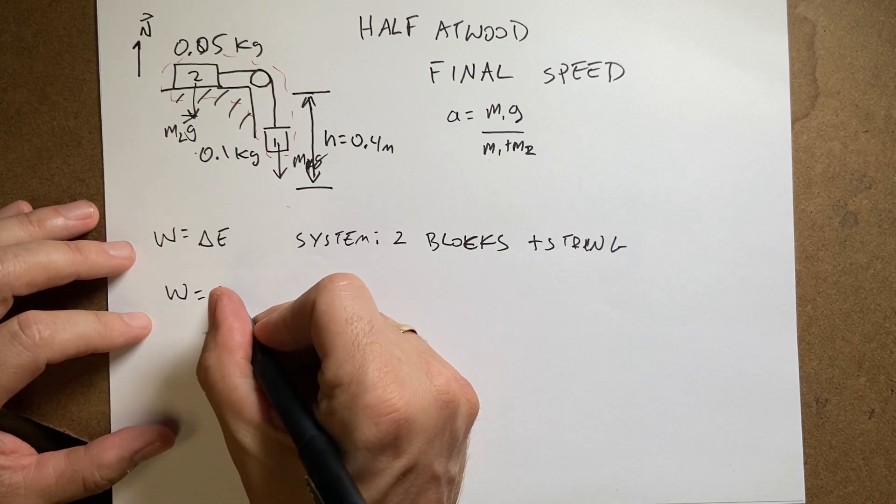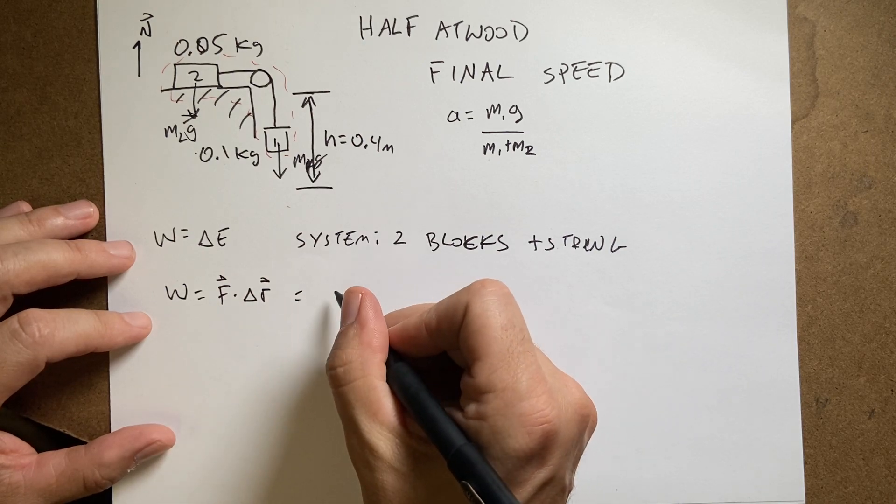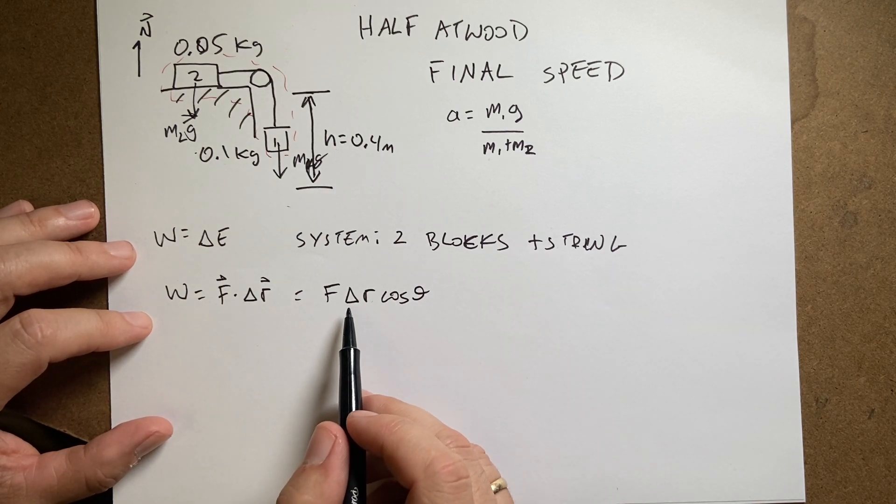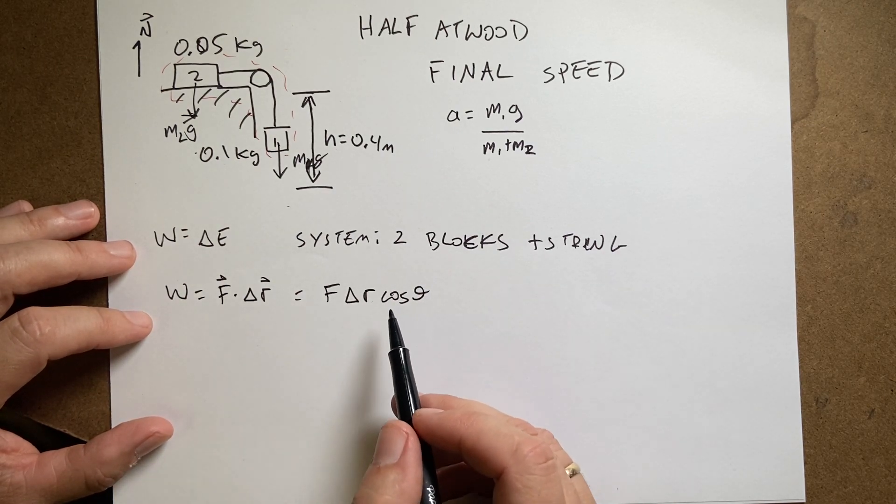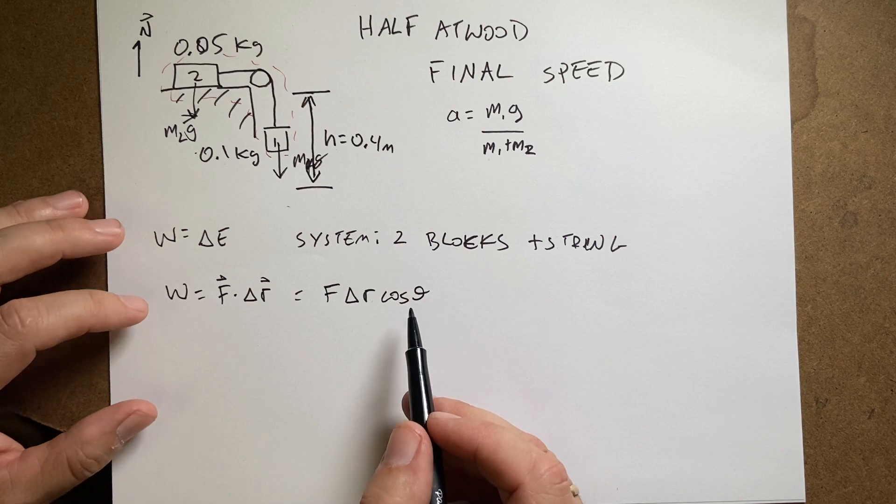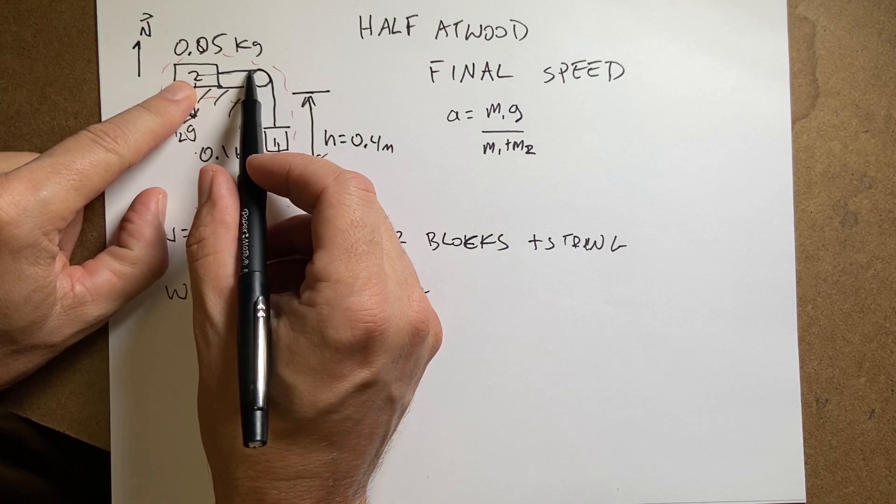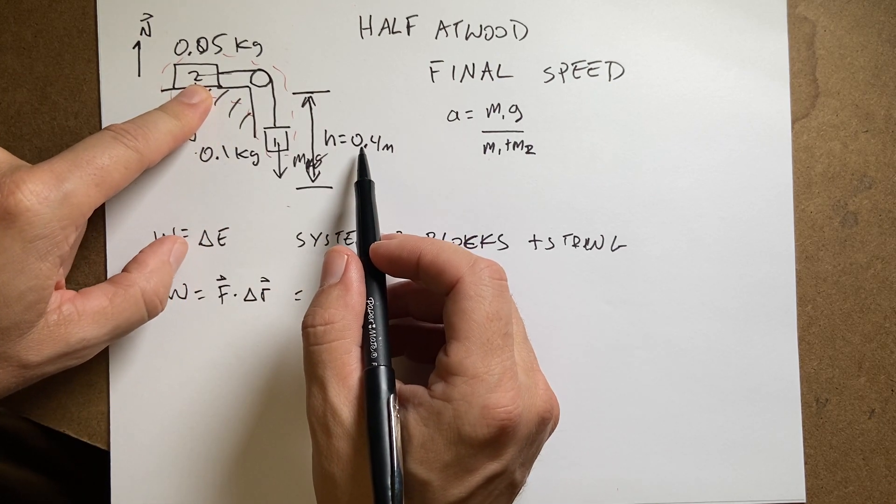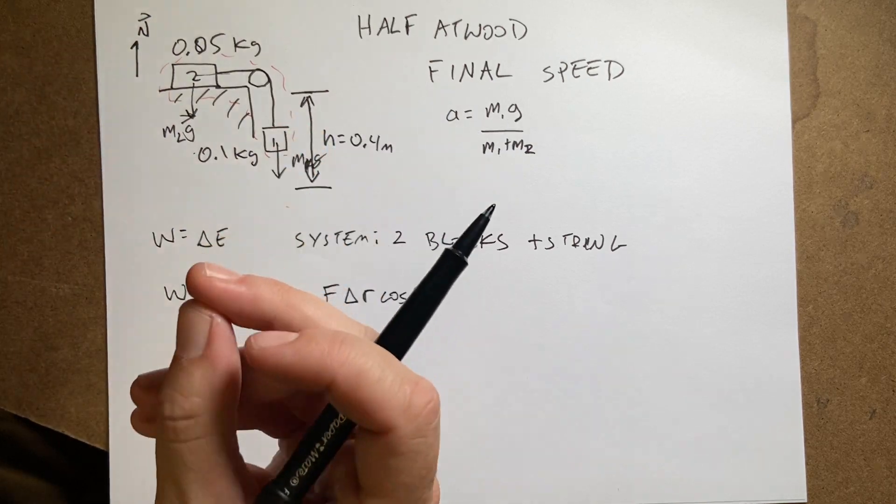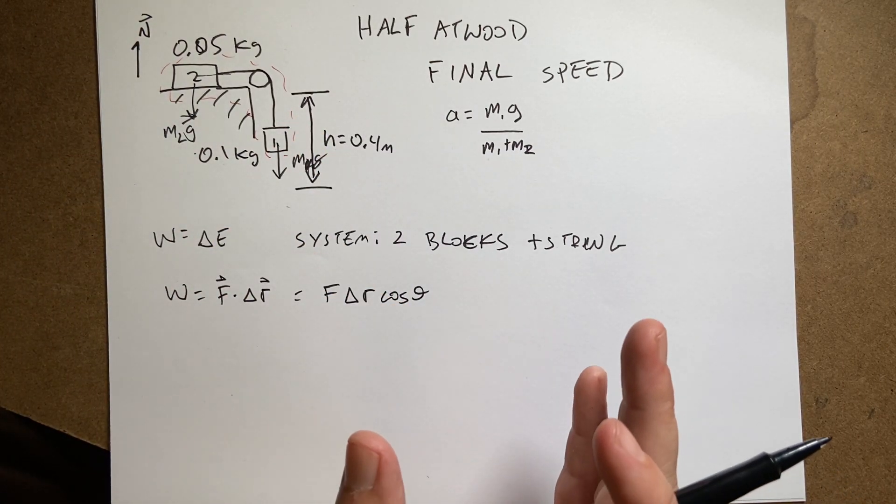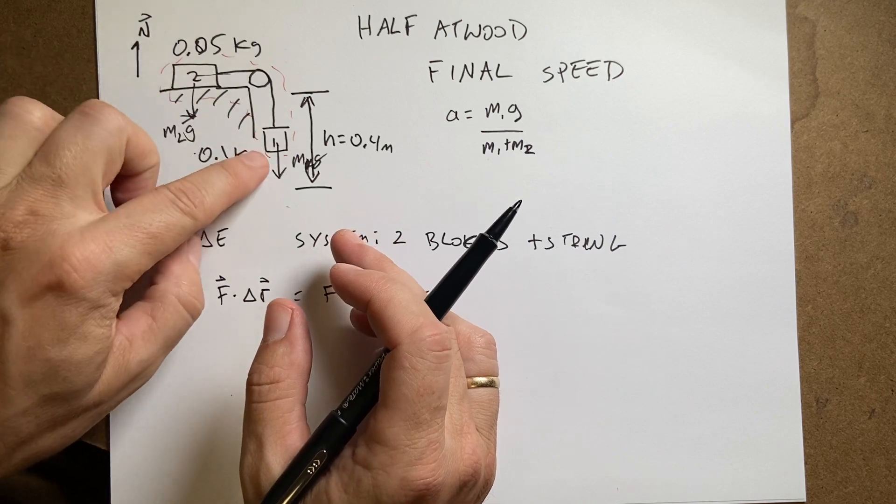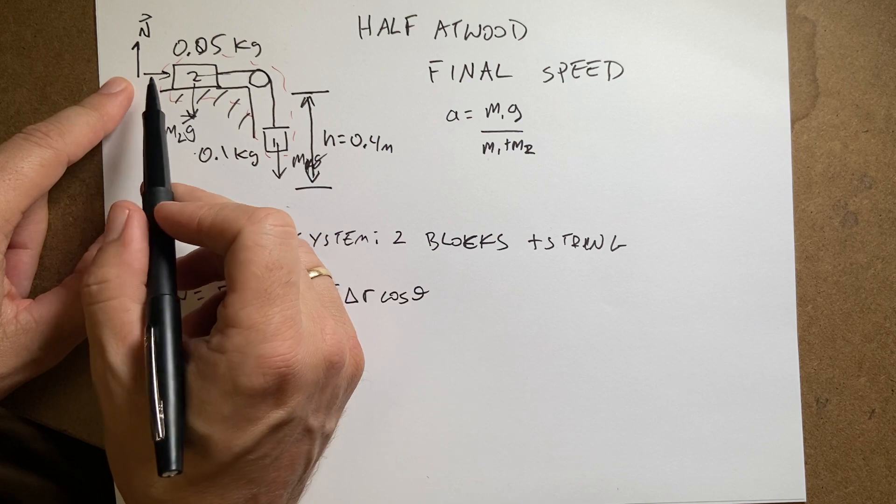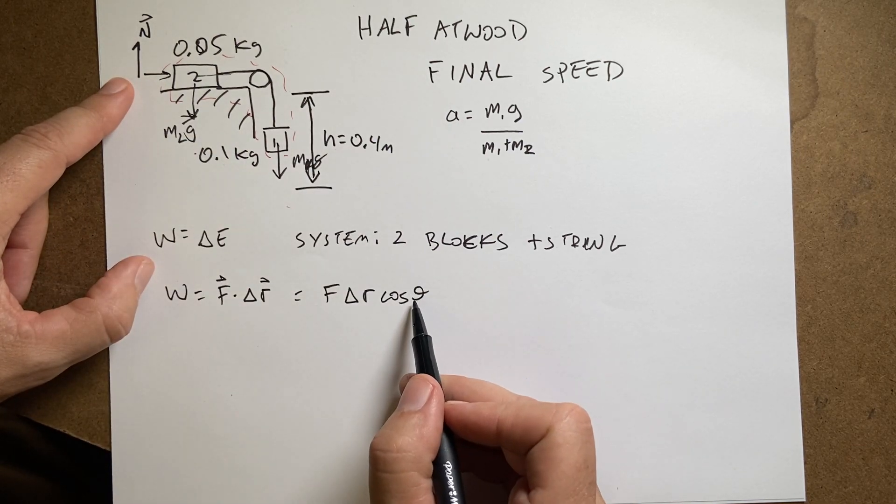So in this case, mass 2 is moving this way. So what work does the normal force do? And mass 2 does move 0.4 meters, right, because the string is connected to the two masses. And if it's not stretchable, then it has to be the same as this one. But in this case, if it's moving this way, if delta r for mass 2 is that way, the angle between n and delta r is 90 degrees. Cosine of 90 is 0.